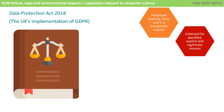The next principle is purpose limitation. Data must only be collected for specified, explicit and legitimate purposes, and not further processed in a manner that is incompatible with those purposes. The only exception to this is relating to public interest and scientific or historical research.